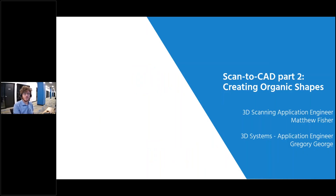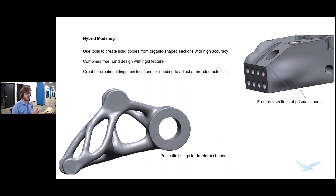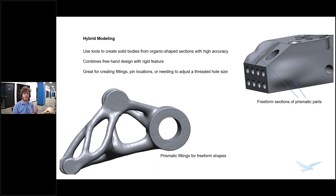Hello everybody. As Ian mentioned, I'm an application engineer at Hawkridge Systems. I wanted to start off by talking a little bit about where we ended last time — this introduction to hybrid modeling and what it is. Traditionally, with prismatic modeling, we use exact fittings, dimensions, and sizings. But what happens when you have something like this block where the geometry is pretty manufacturable but needs to fit something hand-carved? Or something like this brake lever that's all freeform, designed for maximum strength with minimum material — but because of that, we lose those prismatic corners and have to add them back in.